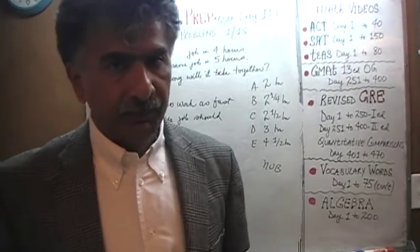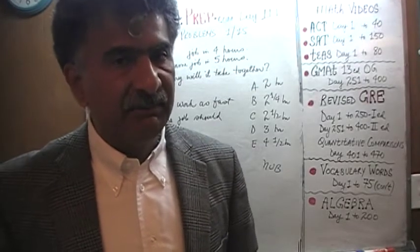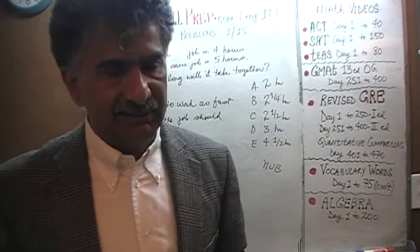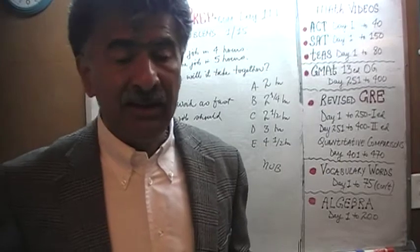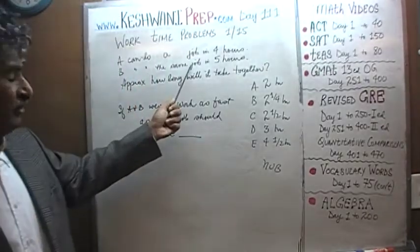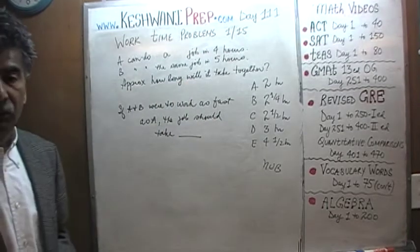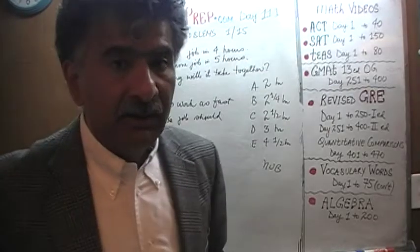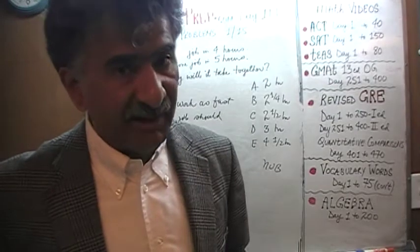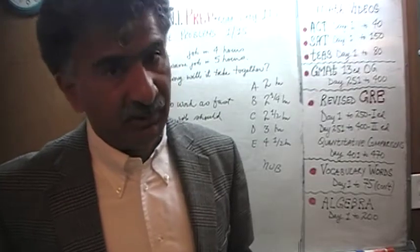What does that tell us? It tells us that the correct answer, whatever it is, cannot possibly be less than two or equal to two hours. Why can't it be two hours? Because both of them are not working as fast as A. B takes five hours, not four. So obviously, in reality, the amount of time they will take to finish the job will have to be something more than two hours. Which means if you find an answer choice which is less than two or equal to two, it cannot possibly be the right answer.